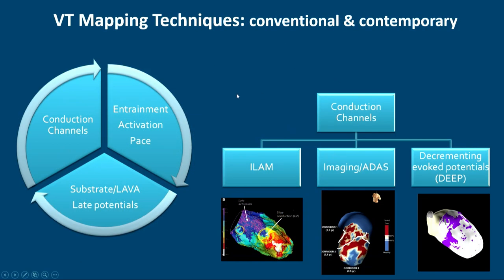In terms of VT mapping techniques, we have conventional entrainment, activation, and pace mapping; substrate, LAVA, and late potential mapping; and conduction channels. Conduction channels are where we try to identify functionally active substrate. Various ways to achieve this include ILAM (isochronal late activation mapping from Roderick Tung's group), imaging ADAS data, and more recently work from Ivorocca in Spain showing that the 'protectedness' of an isthmus defined by MRI can determine functional elements alongside decrementing potential mapping.